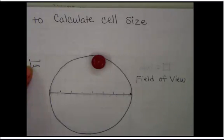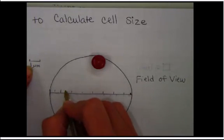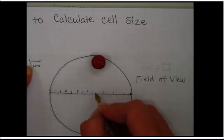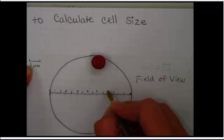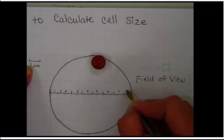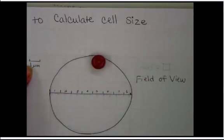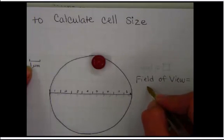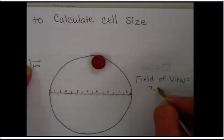Which I also know that that centimeter is represented by the 1 micron. So I know that 1, 2, 3, 4, 5, 6, 7, and we'll say a half is my diameter. Or we could simply refer to it as field of view. So my field of view is 7.5 microns.